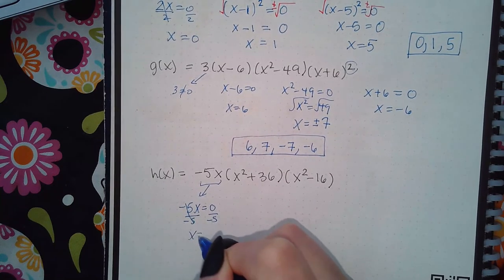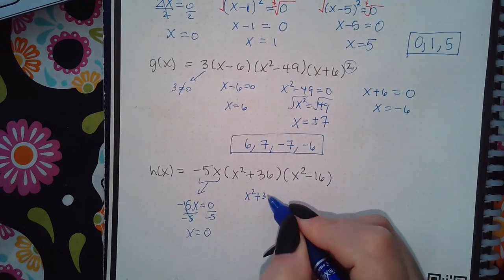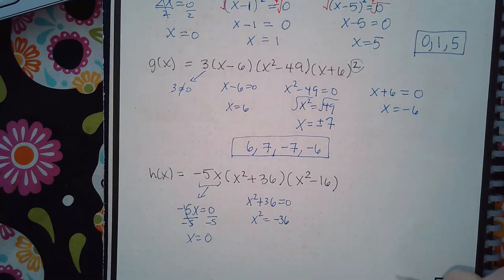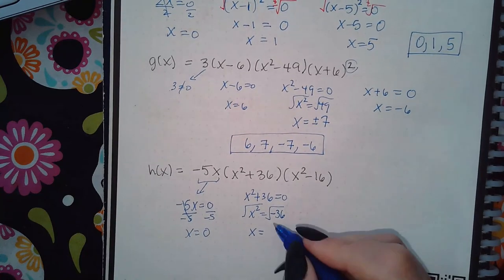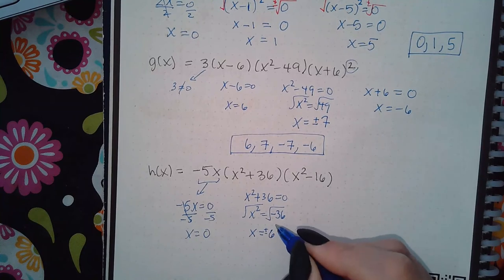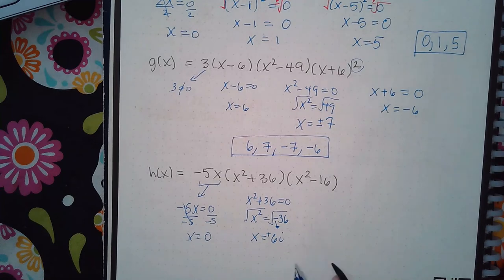So I get x equal to zero. We get x² plus 36 equal to zero. Moving over the 36 I get negative... when I try to take the square root I get imaginaries. I get plus or minus 6i because of the negative.